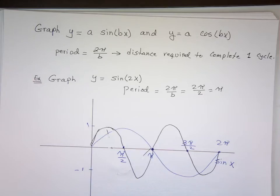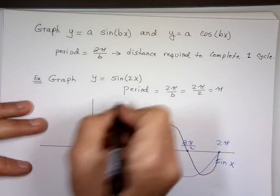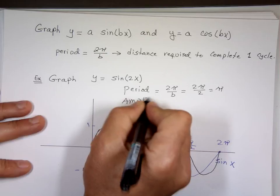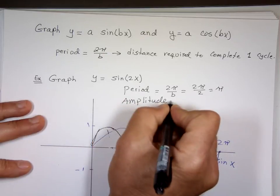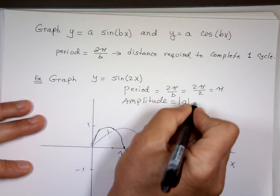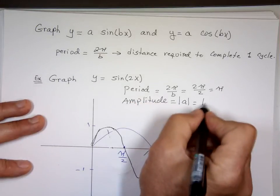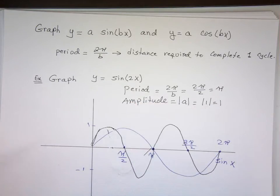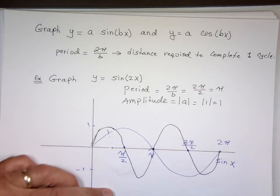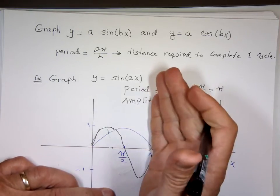The amplitude is the absolute value of A. What is the number in front of sine here? It's one. The absolute value of one is one. So when graphing, I'm only going to show one cycle — up to π. That's all you're going to see.